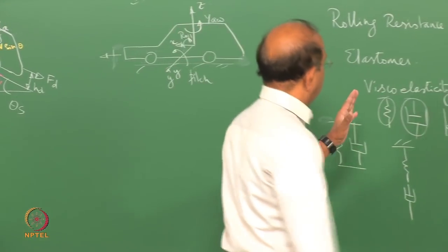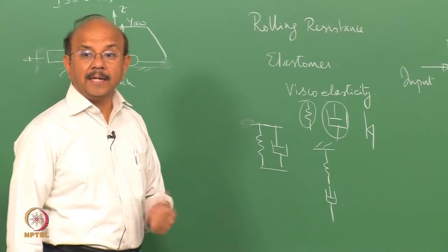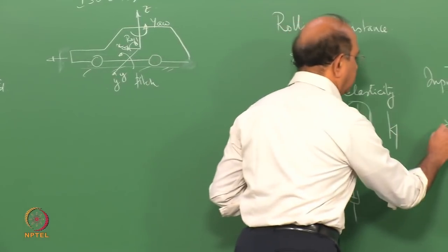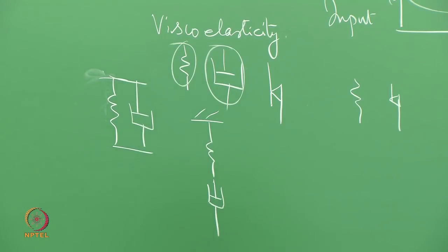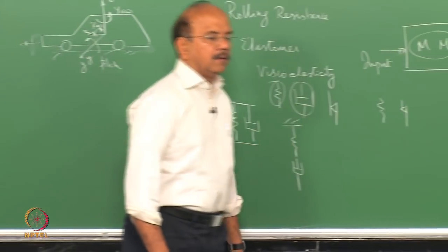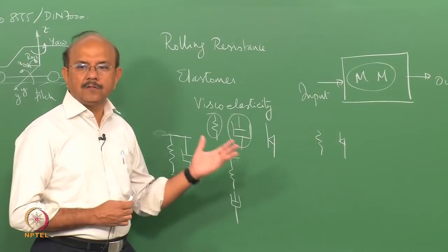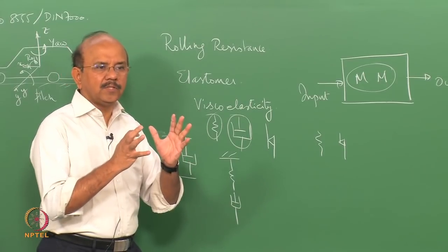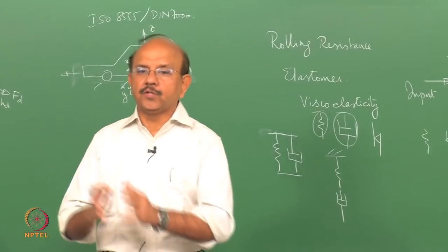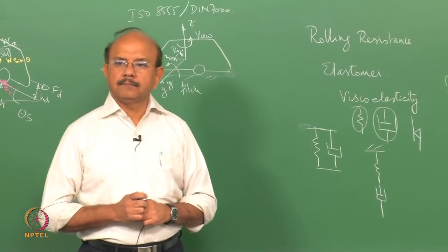For example, if you take a metal into the plastic region, you can model it using a spring and the friction element. You can join these elements together in parallel or series and write a mathematical equation that forms the basis of the constitutive equation, or stress-strain behaviour, of the material.